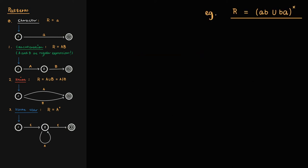Let's look at another example. This time, we'll set R equal to (ab union ba)*.